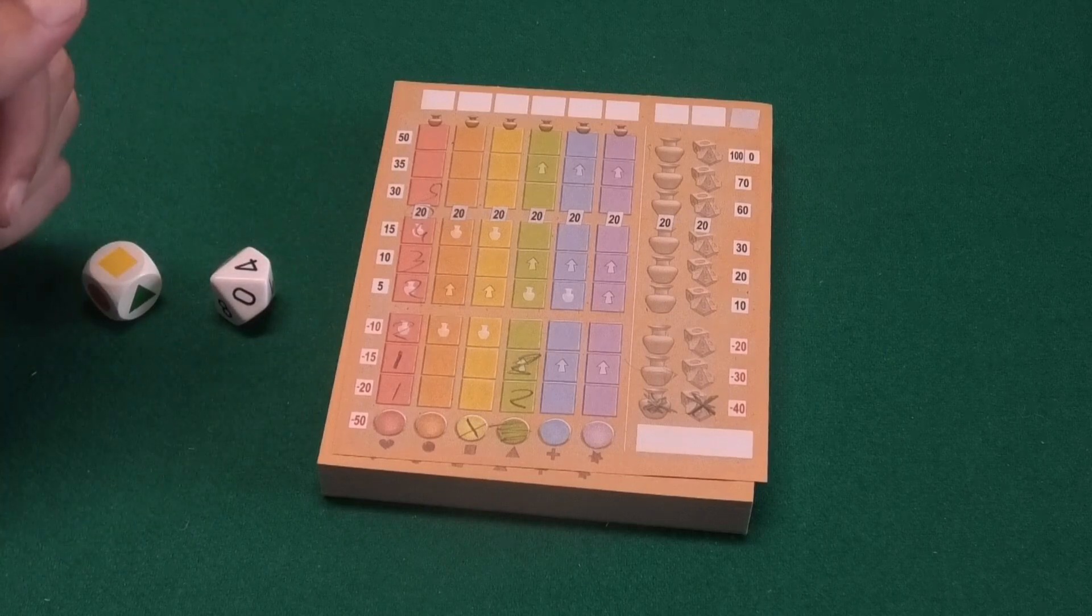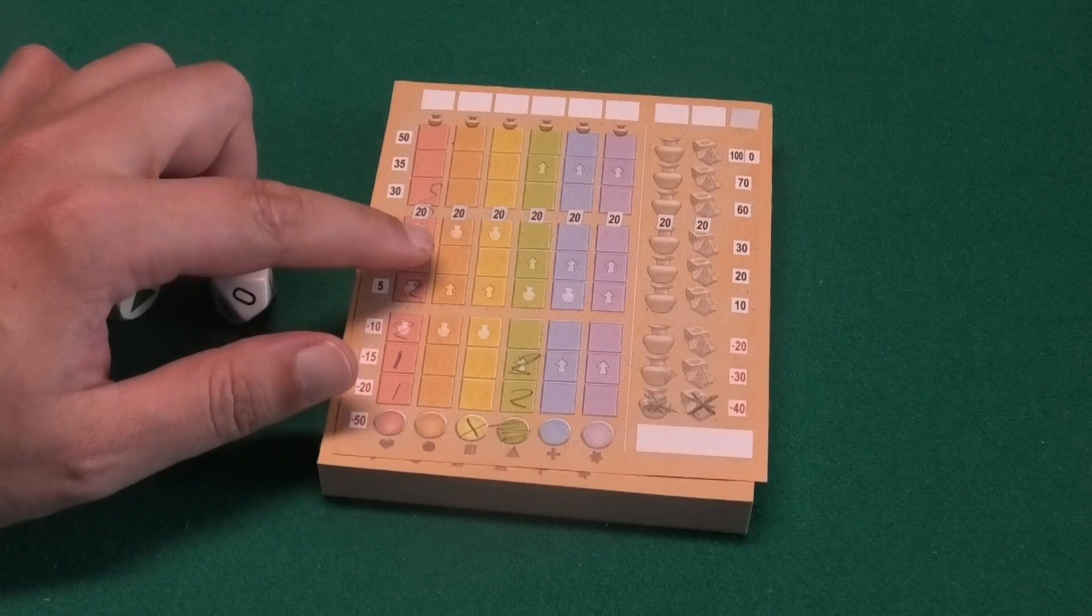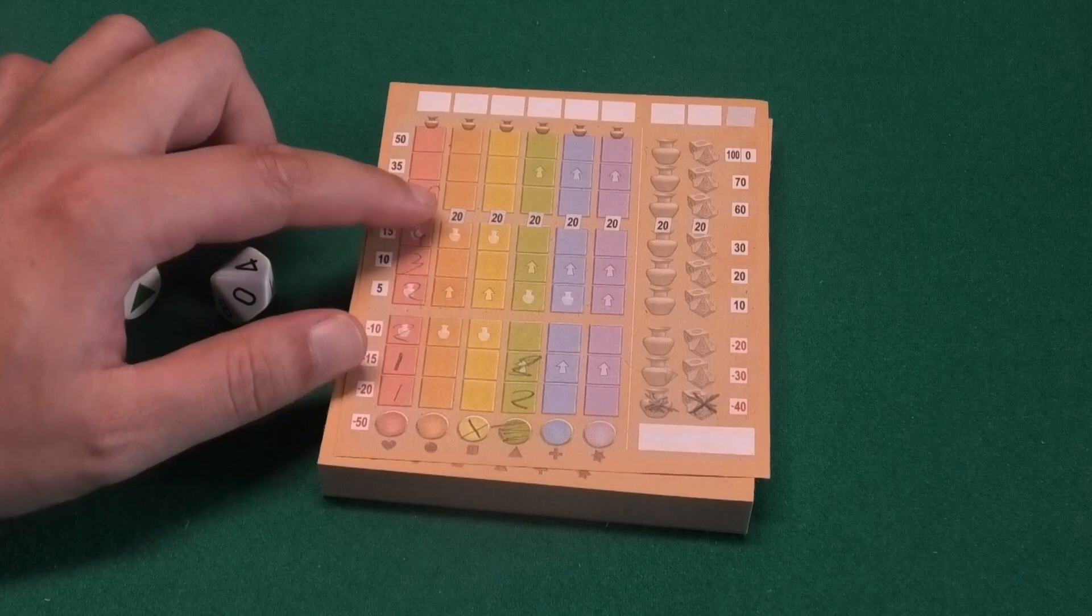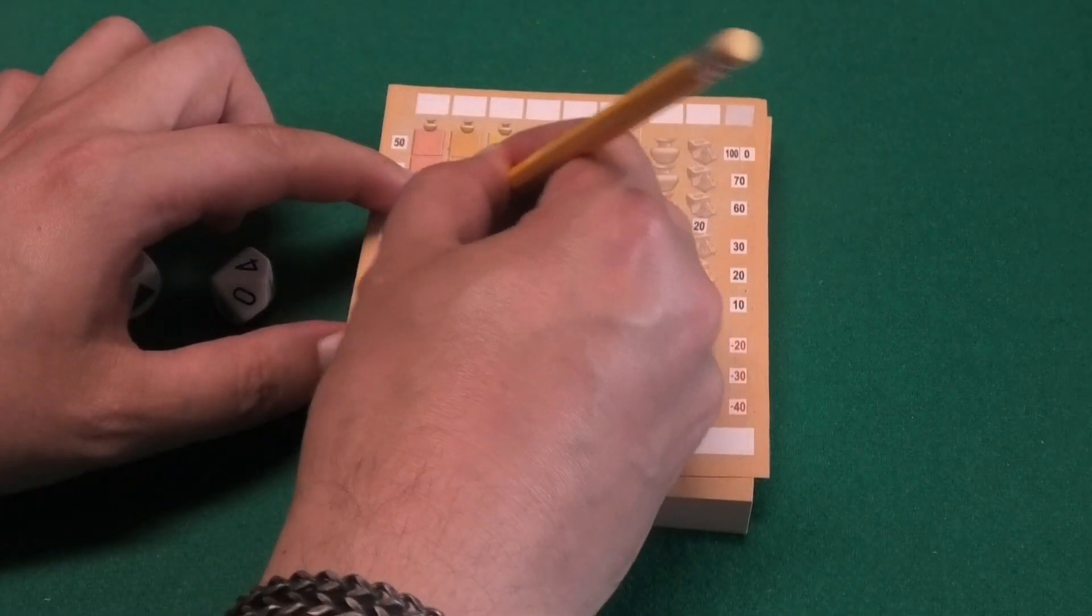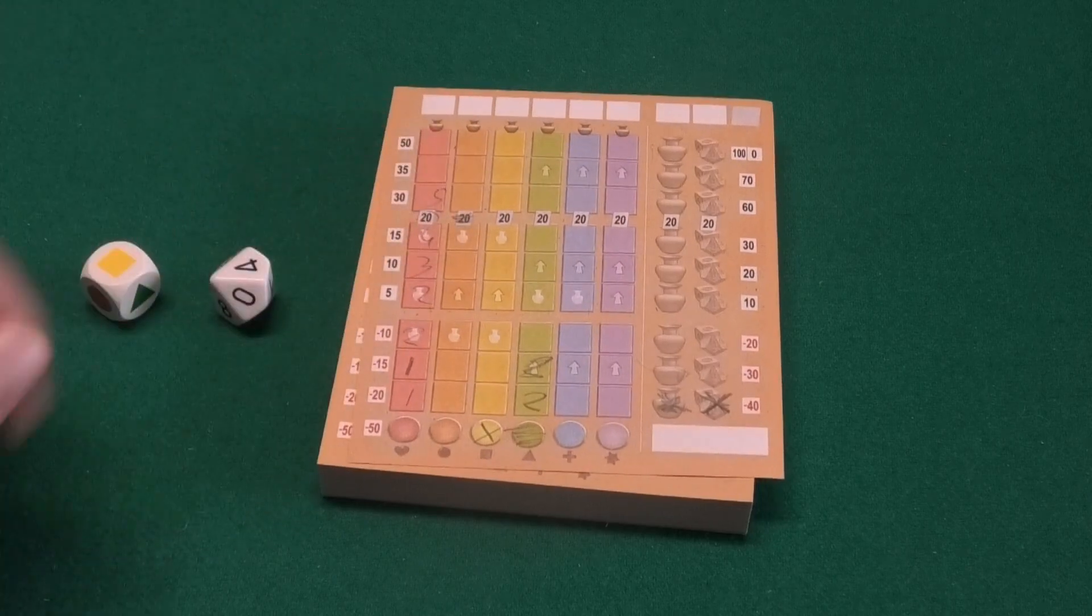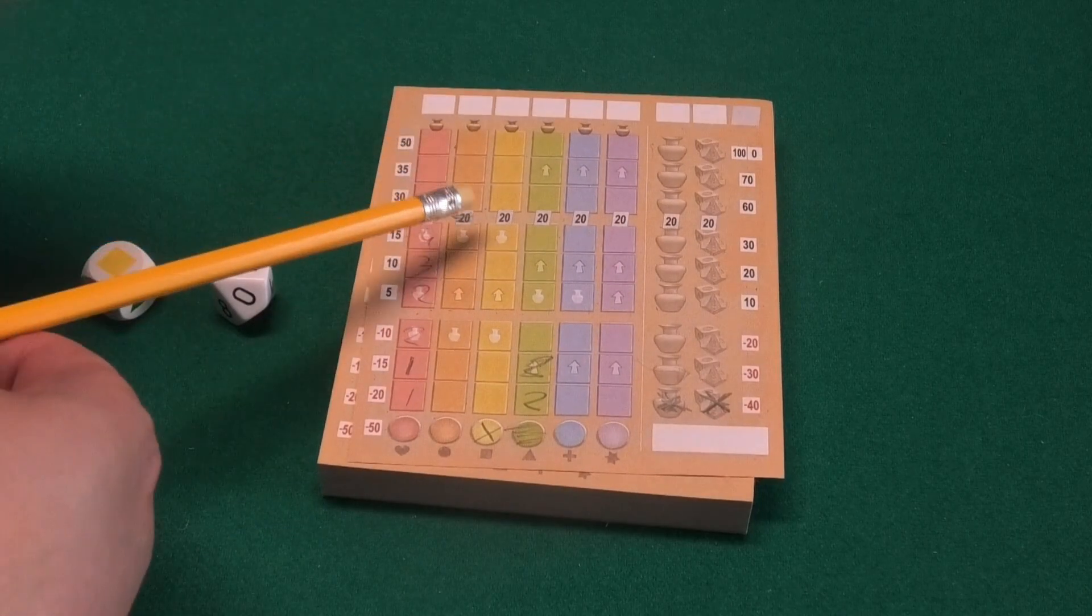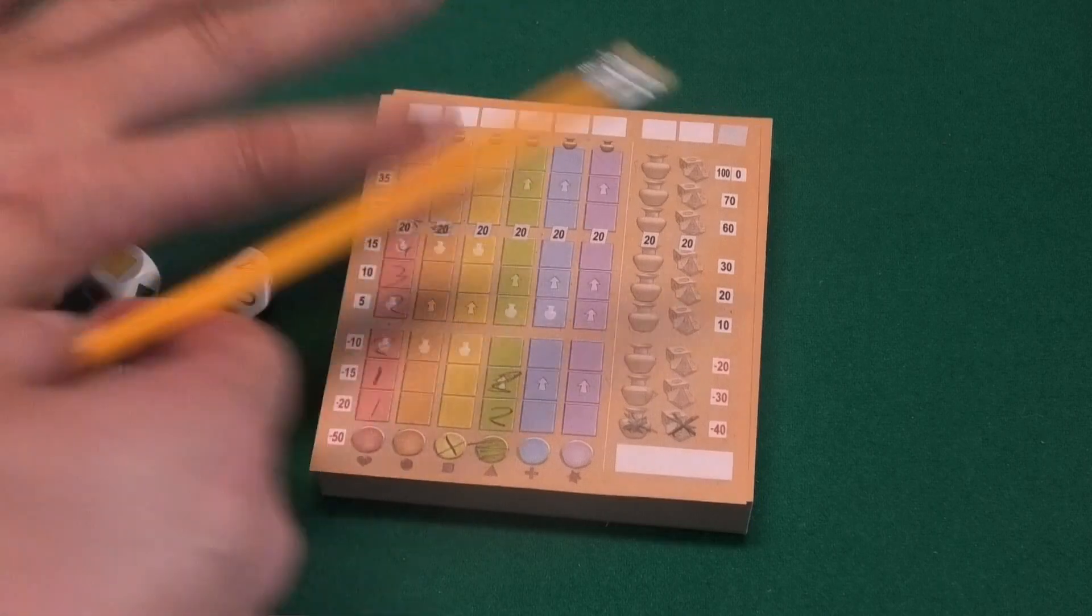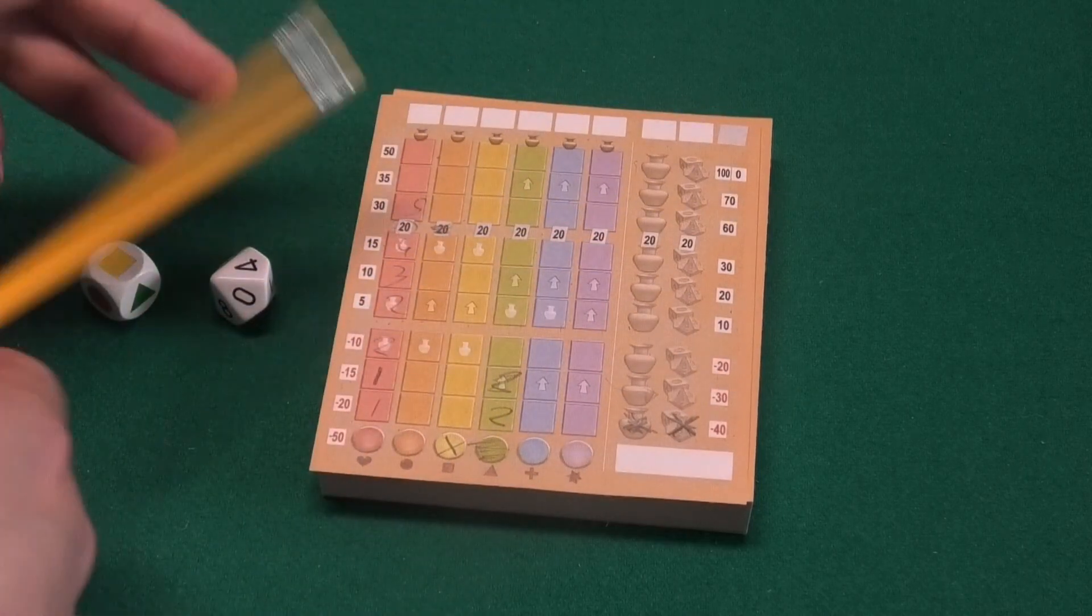All other players have to cross off the 20 and cannot score it anymore. So maybe with the orange, another player says hey I passed the orange bridge. Then I have to cross it down and I will not score the 20 points should I later in the game also pass this field. So once all bridges are passed in the entire game, the game will end after that turn.